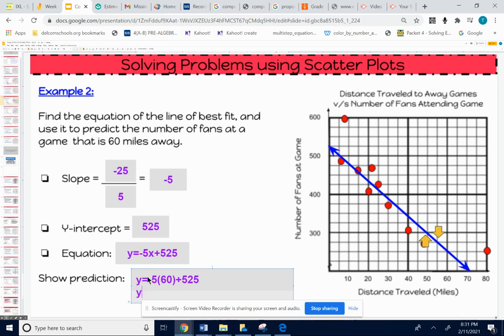To solve for y, it's already alone. So we don't have to do much except to evaluate the right-hand side here. We've got to multiply before we add. Negative 5 times 60 is negative 300. Add 525 to that - that would be 225.